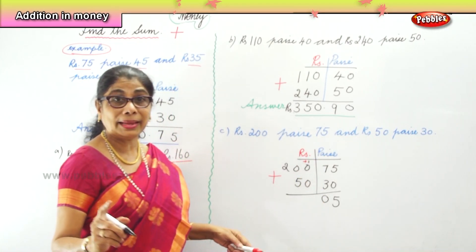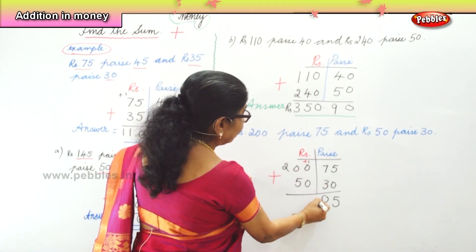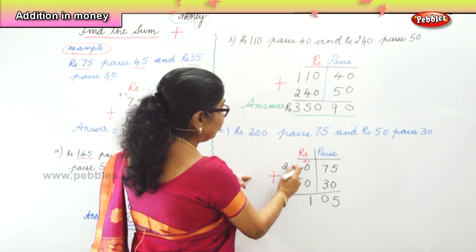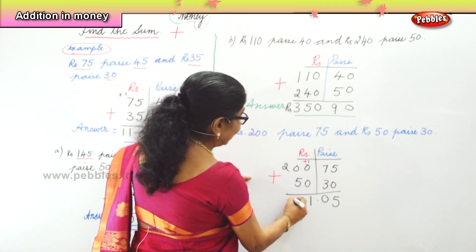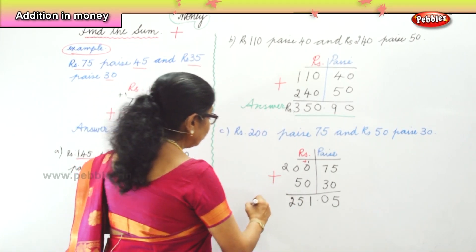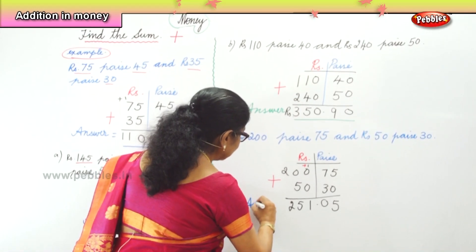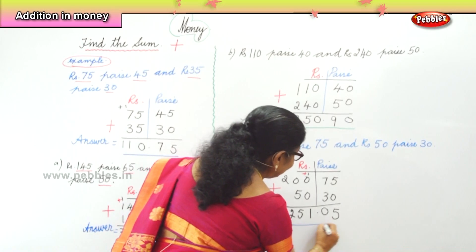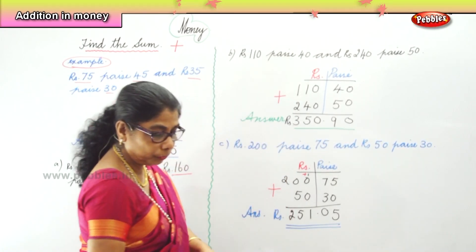Since 100 paise make one rupee, we write 0 in the paise column and carry 1 to rupees. In the rupees column: 1 plus 0 is 1, 0 plus 5 is 5, and bring down the 2. So our answer is 251 rupees and 5 paise.